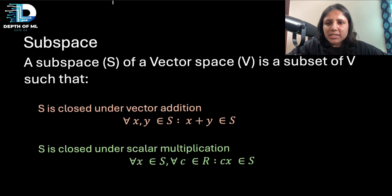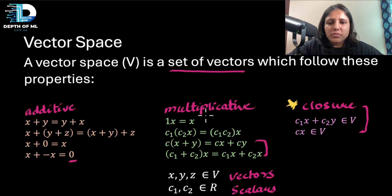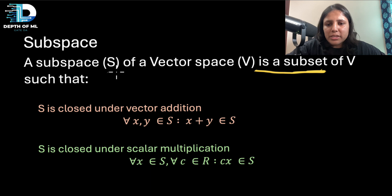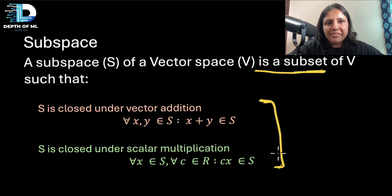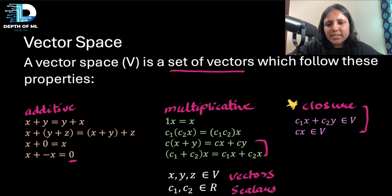A subspace S of a vector space V is first of all a subset of V — it's important to think of vector spaces as sets of vectors. A subspace S is a subset that follows the two closure properties. The additive and multiplicative properties are inherited from the original vector space, so you only need to verify the closure properties.